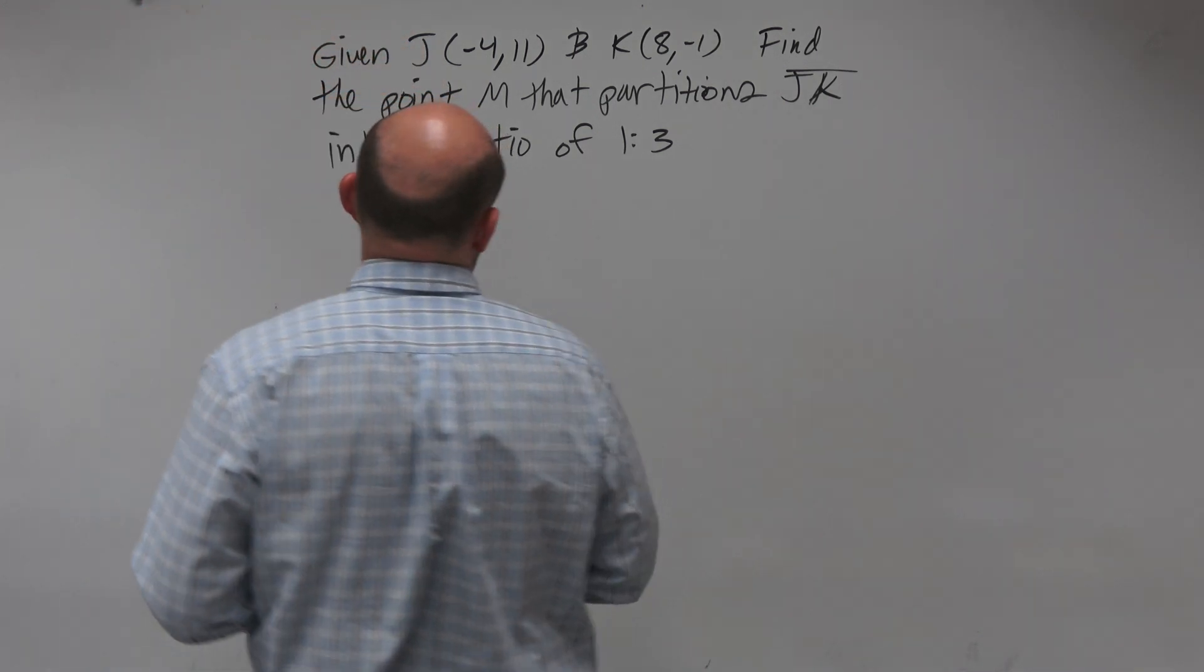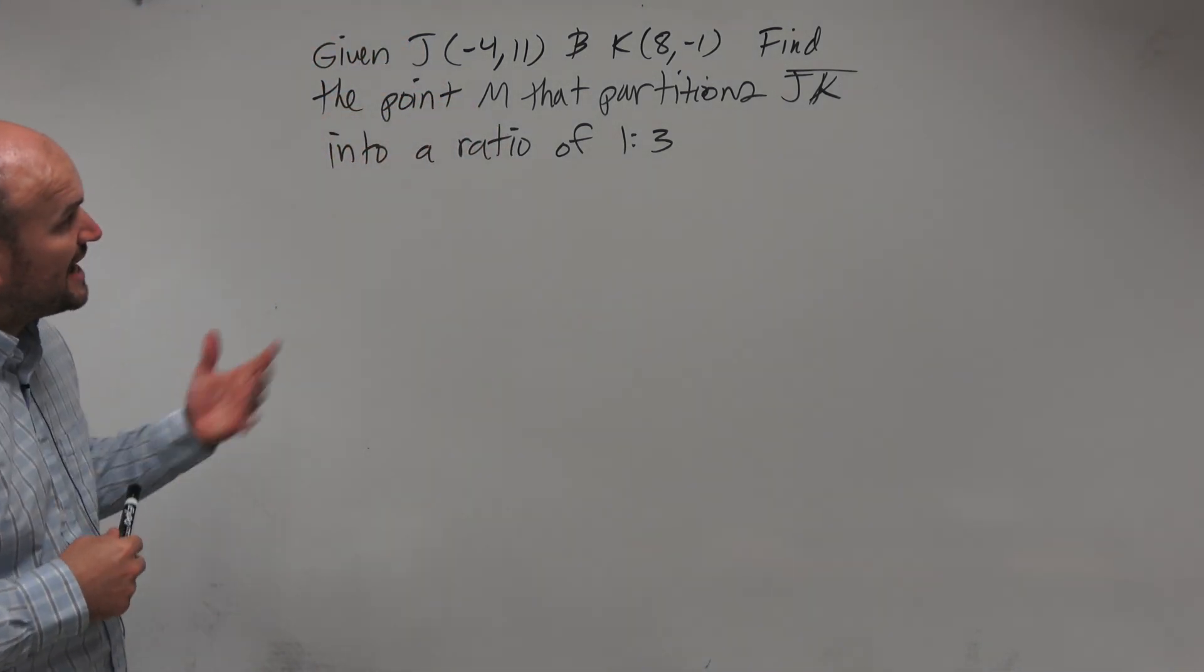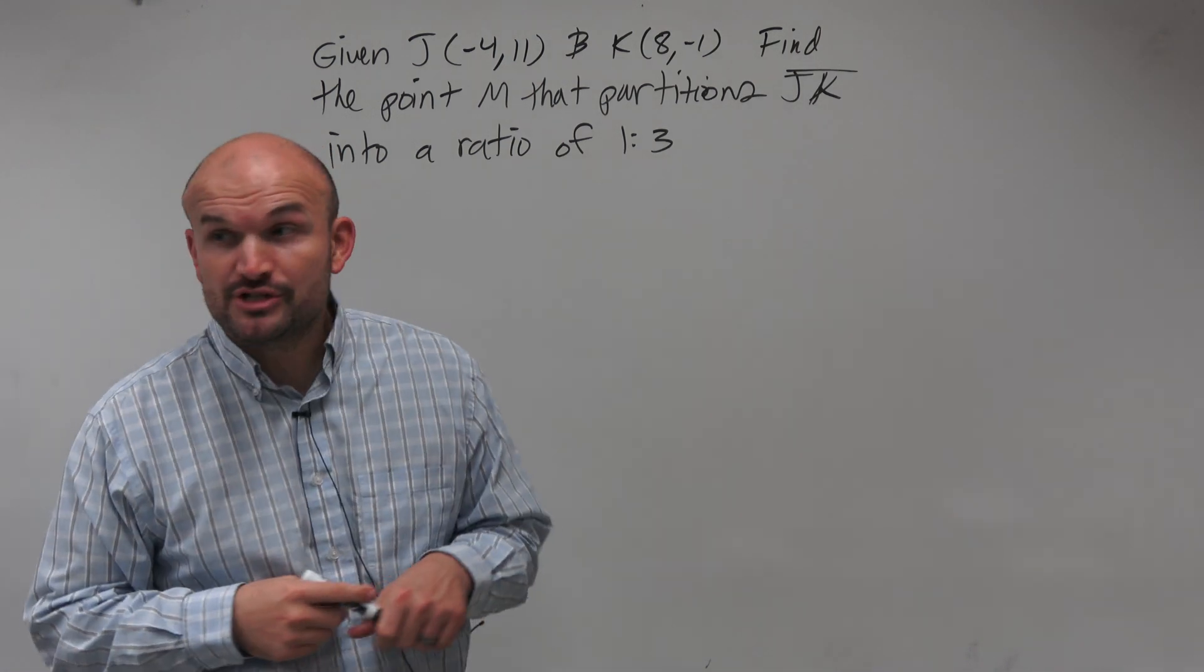So in this example, we're given two points, J and K, and we're going to find point M that partitions JK into a ratio of 1 to 3.